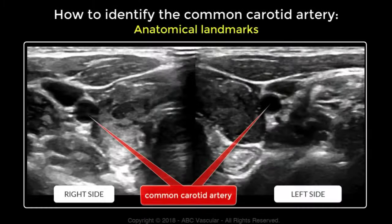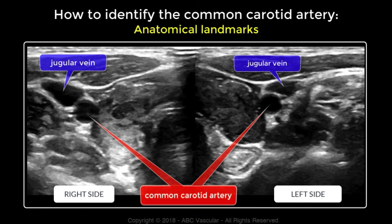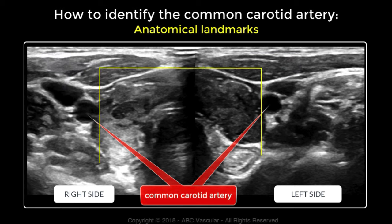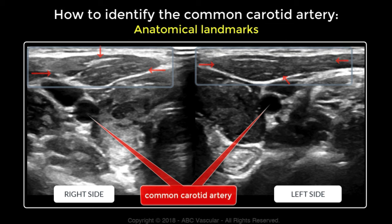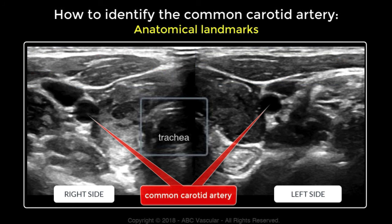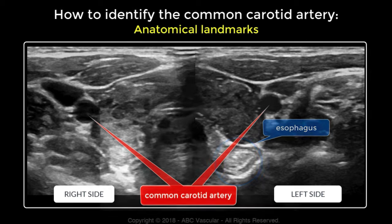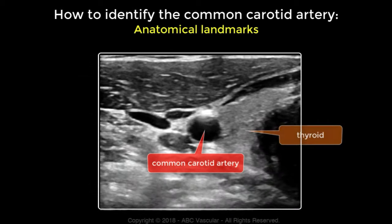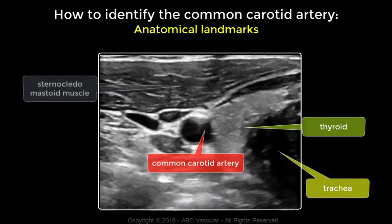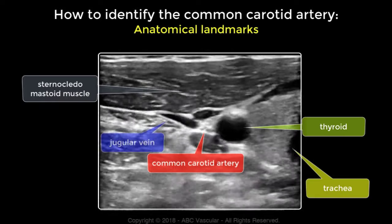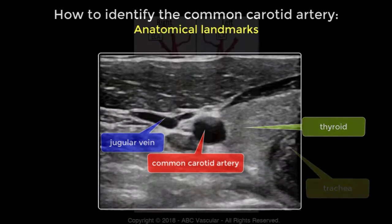In addition to the jugular vein, there are other anatomical landmarks that can be used to identify the common carotid artery. These include the thyroid lobes on both sides, which are adjacent to the common carotid artery; the sternocleidomastoid muscle, which is contained within the muscular fascia superiorly with respect to the common carotid artery; the trachea, recognisable by the hyperechoic structures of the cartilage; and on the left side, the oesophagus. To summarise, the common carotid artery is adjacent to the thyroid lobe, to the side of the trachea, below the sternocleidomastoid muscle, and adjacent to the jugular vein.